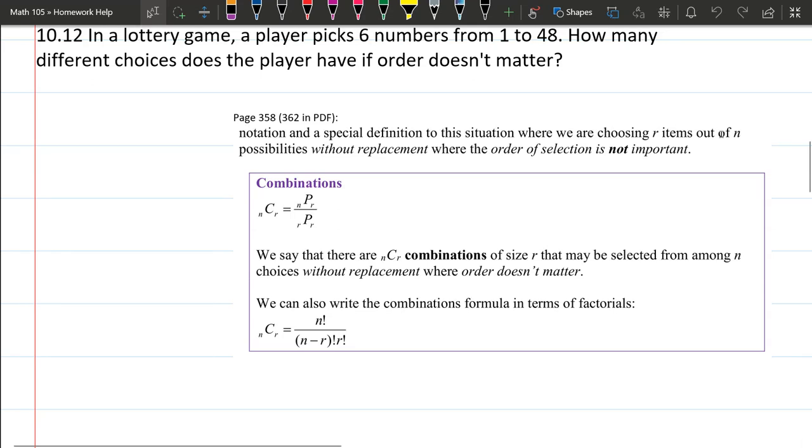We're looking at Chapter 10 number 12. In this lottery game, a player picks six numbers from 1 to 48. How many different choices does a player have if order doesn't matter? Order doesn't matter is super important.